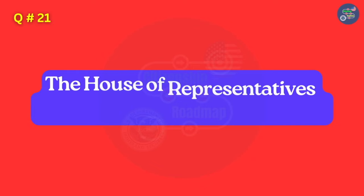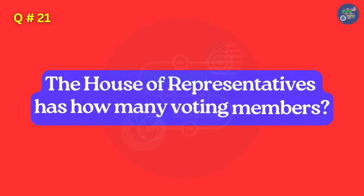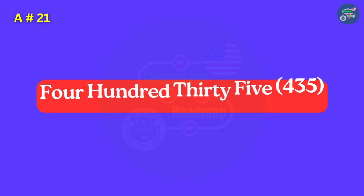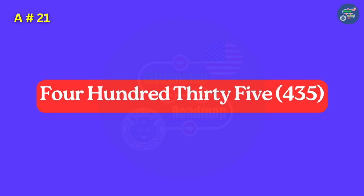The House of Representatives has how many voting members? 435.